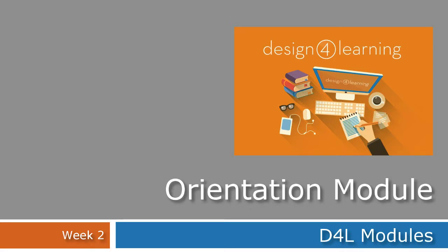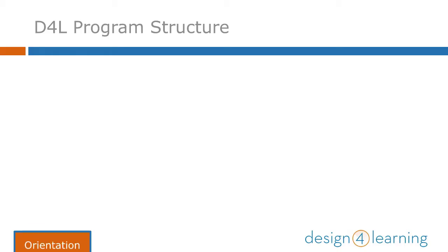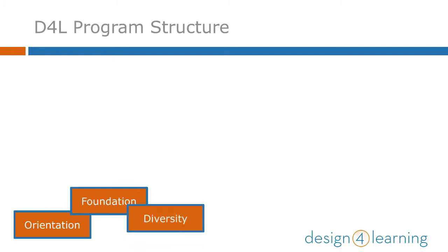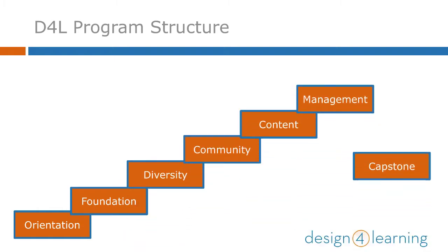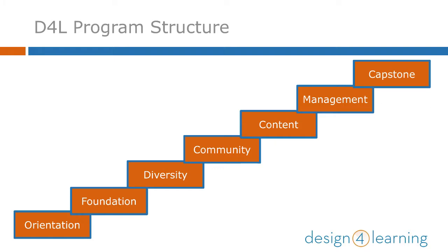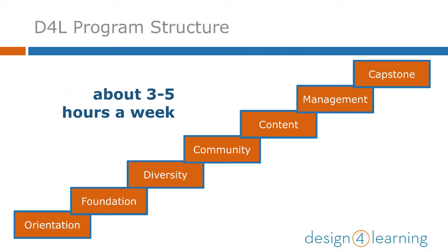This video for Week 2 of the Orientation Module is about the series of modules in the Design for Learning program. The program is composed of seven modules, each one building on the last as you work on developing a unit of online instruction for your own library community to be piloted during the capstone module. The modules are designed to take about 3-5 hours a week, over 2-6 weeks. Most take 4 weeks.